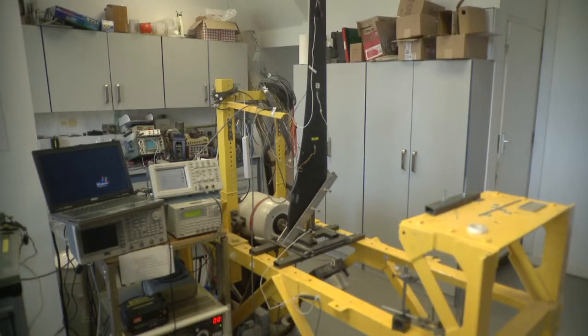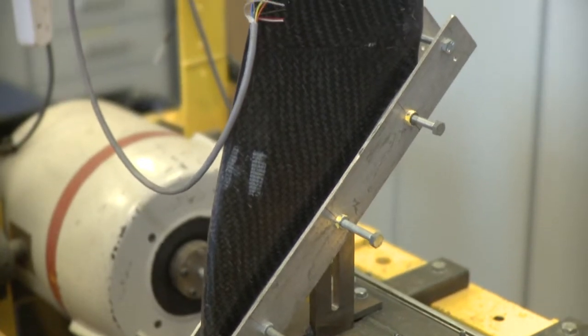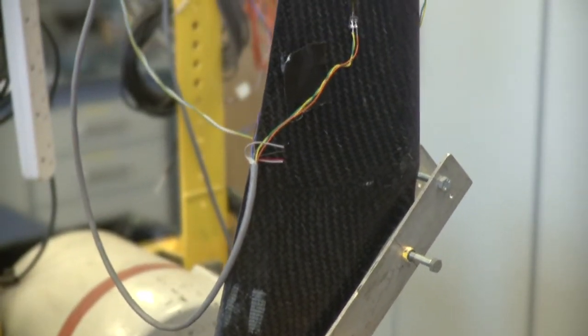We're in the structures and vibrations laboratory today. What we have here behind us is a wind turbine blade of a 2.5 kilowatt wind turbine, which is quite a small domestic wind turbine blade.